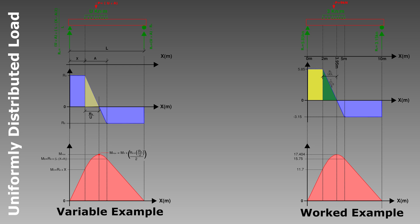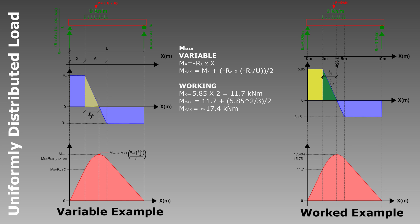Calculating the peak bending moment is as simple as equating the area under the shear force curve up to the point where it crosses zero. Since we already know the bending moment at the start of the UDL, we only need to calculate the triangular area under the curve to where it crosses zero. The shear force at the start of the UDL equals RA, and the gradient of that line is u, so the distance to the zero crossing is RA/u. The peak moment contribution from the UDL region is RA times that distance divided by two, added to the bending moment at the start of the UDL.